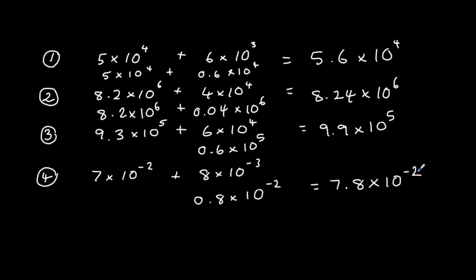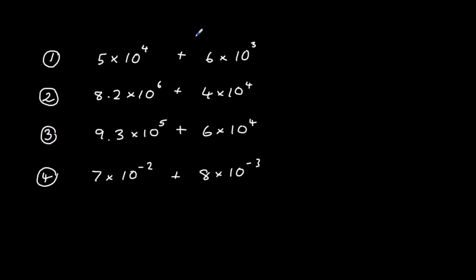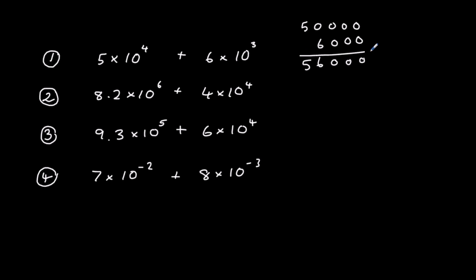We could have done these questions by converting them to ordinary numbers instead. For the first one, 5 times 10 to the power of 4 is 50,000, and 6 times 10 to the power of 3 is 6,000. Add them up to get 56,000, and convert back: 5.6 times 10 to the power of 4.